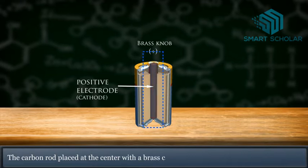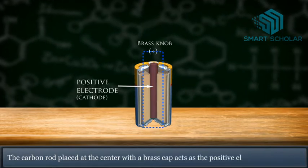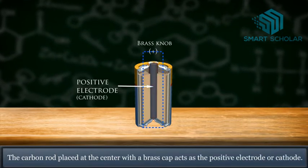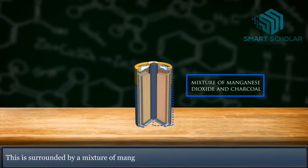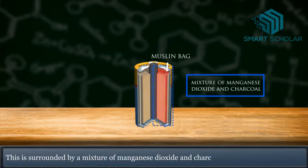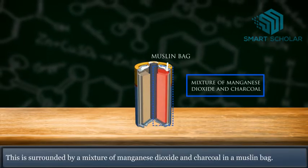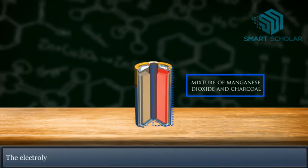The carbon rod placed at the center with a brass cap acts as the positive electrode or cathode. This is surrounded by a mixture of manganese dioxide and charcoal in a muslin bag.